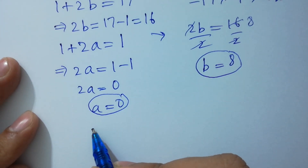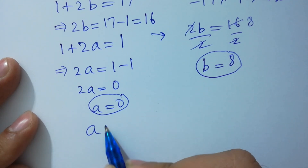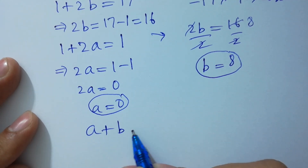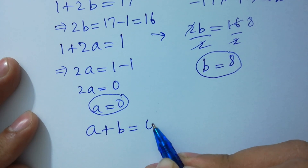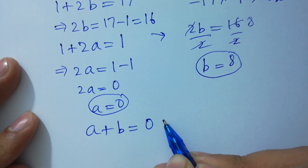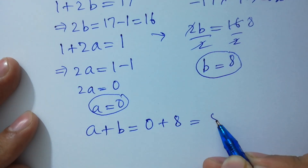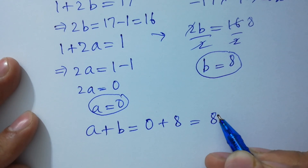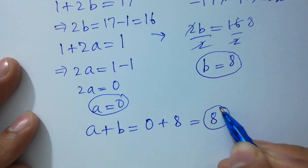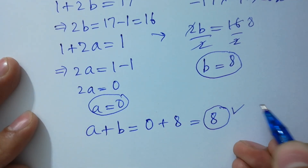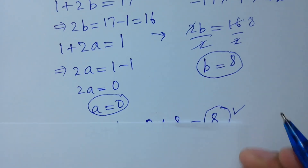So the value of a plus b: a is 0, b is 8 (taking √b = 8, b = 8 as used here), giving 0 plus 8 equals 8. So a plus b equals 8.